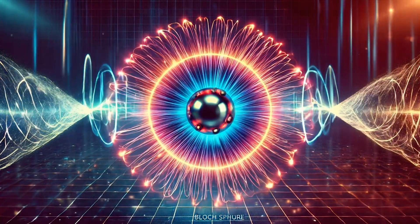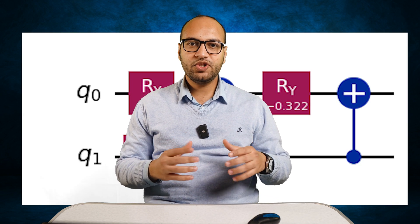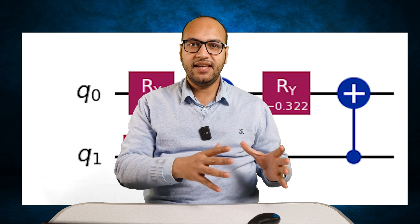Performing quantum computations is a very challenging task. It requires performing physical operations on physical qubits within a given time. To use a quantum computer, we need to map our computations and develop a quantum algorithm — a set of instructions composed of quantum gates that can operate on qubits. Qubits are the building blocks of quantum information, and quantum gates are used to manipulate their quantum states.